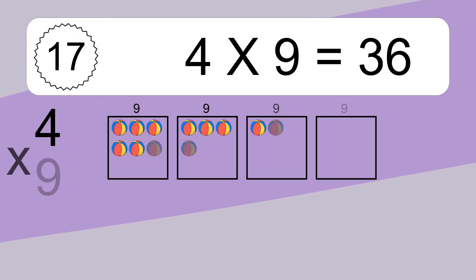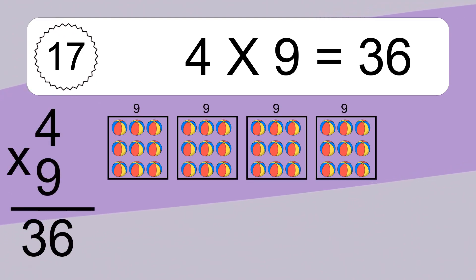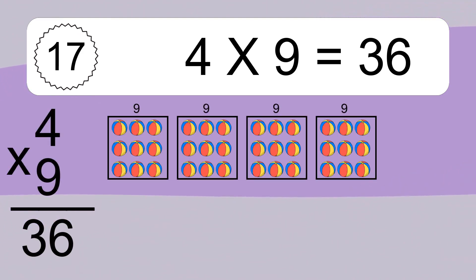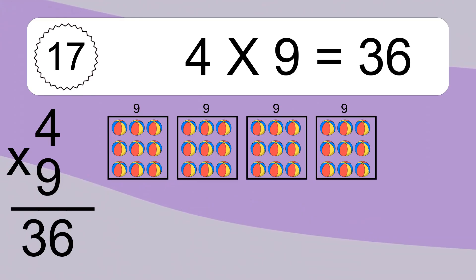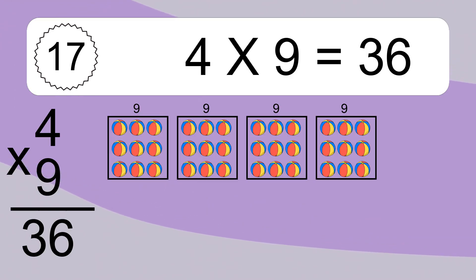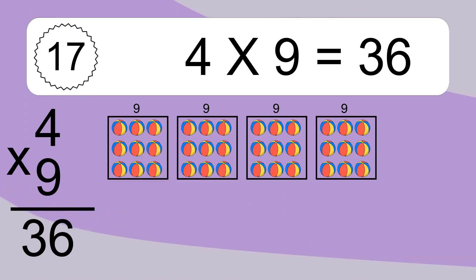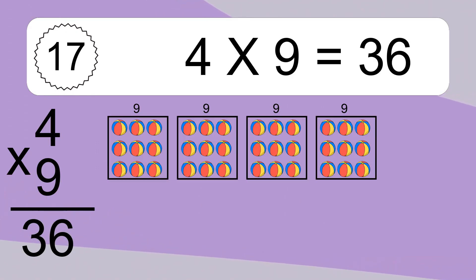4 times 9 equals what? 4 times 9 equals 36. We have 4 boxes and each box has 9 colorful balls inside. If you count all the balls in all the boxes together, you will have 4 times 9 balls. This equals 36 balls.